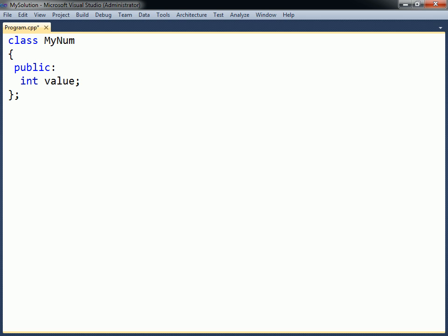This lesson covers how custom type conversions for an object can be defined. In this example, there is a class called MyNum with a single integer field.